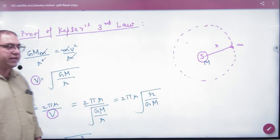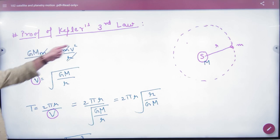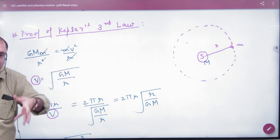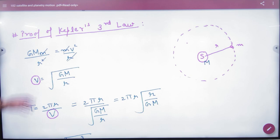What is the centripetal force on earth? mv squared by small r. Who provides the centripetal force? The sun's gravitational pull. What is the gravitational pull? GMm by r squared.